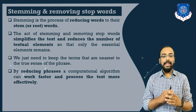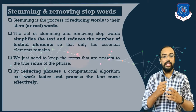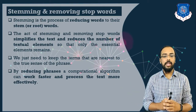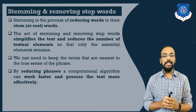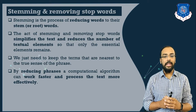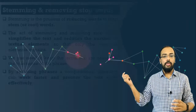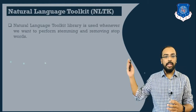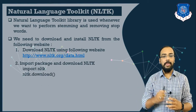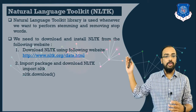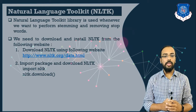Reducing the number of phrases is necessary because whenever we work with a computational algorithm it will work much faster and process the text more efficiently. Python provides us a library for performing stemming and removal of stop words. The library available is NLTK — that is Natural Language Toolkit. Whenever we want to perform stemming or remove stop words, we have to use this library.